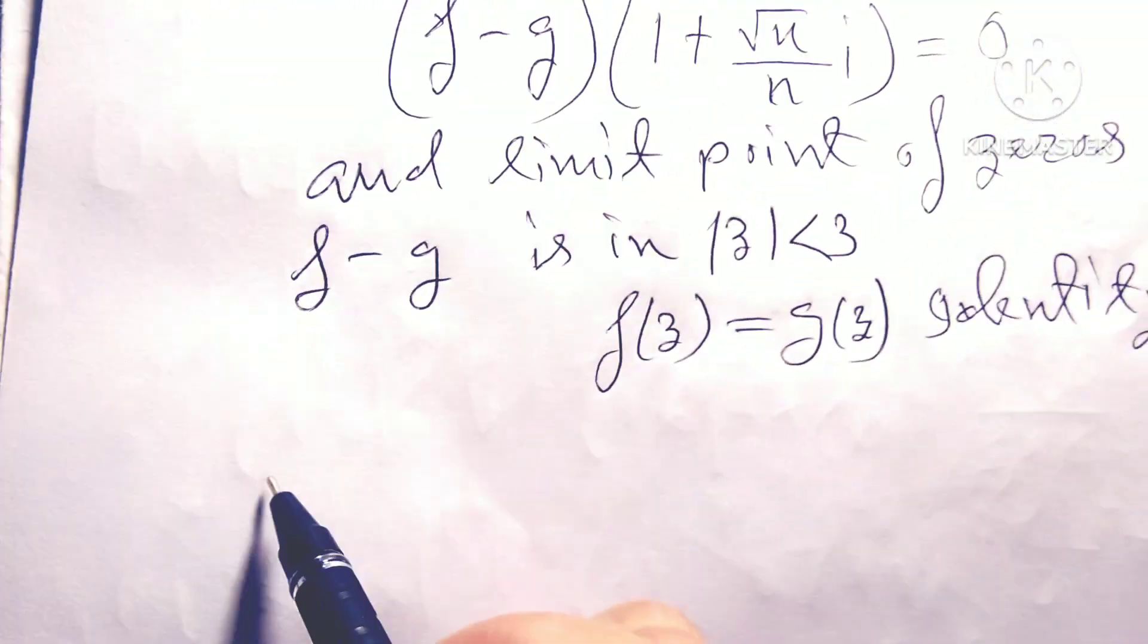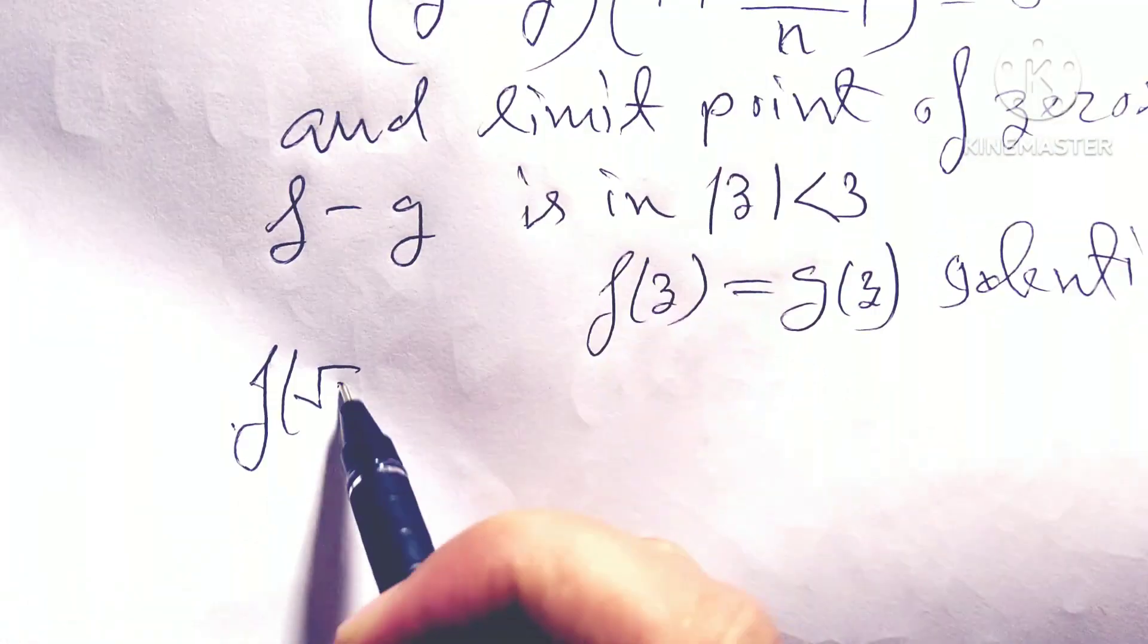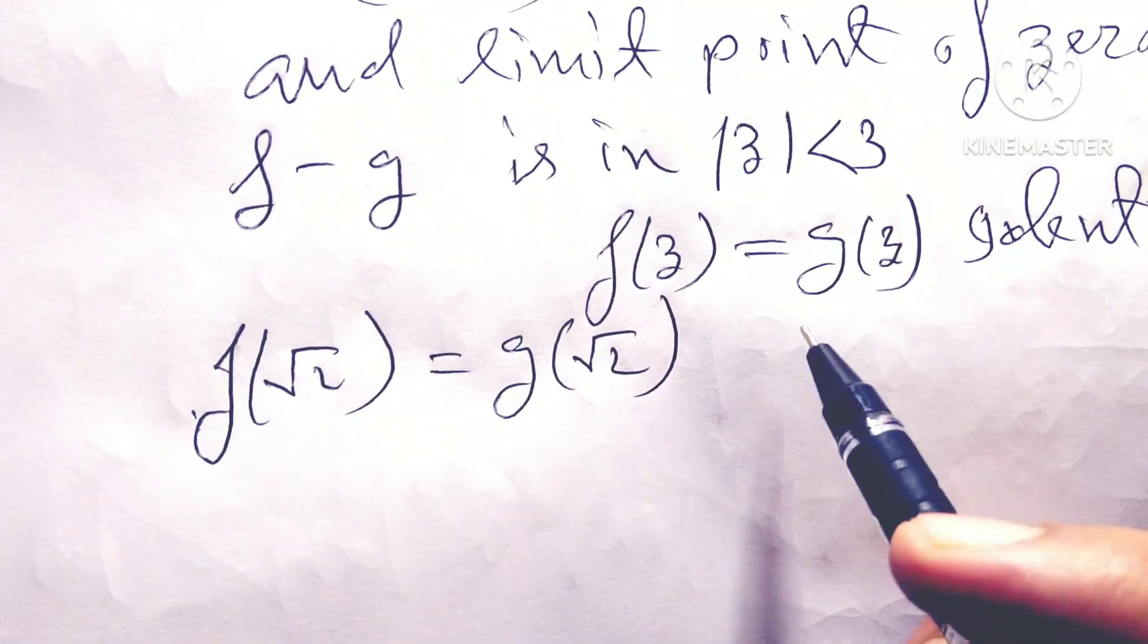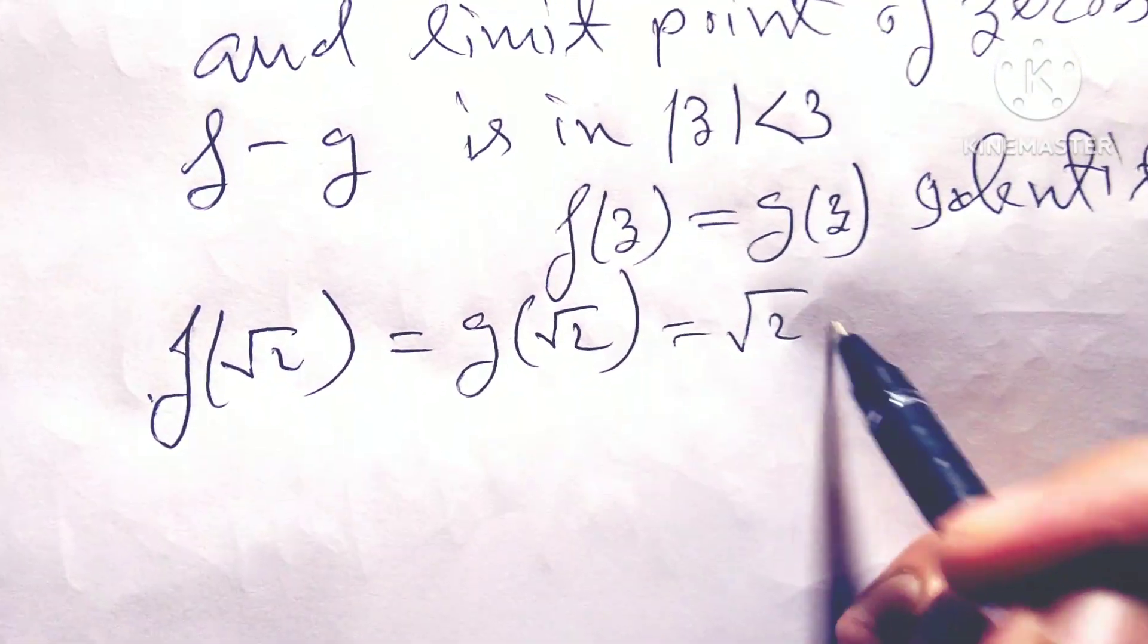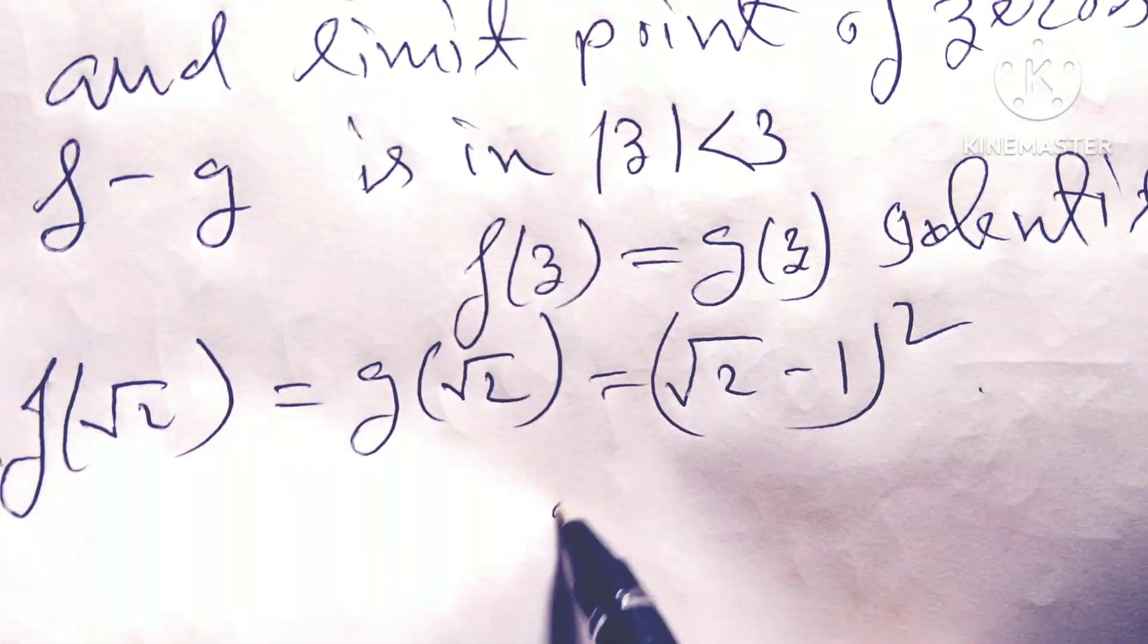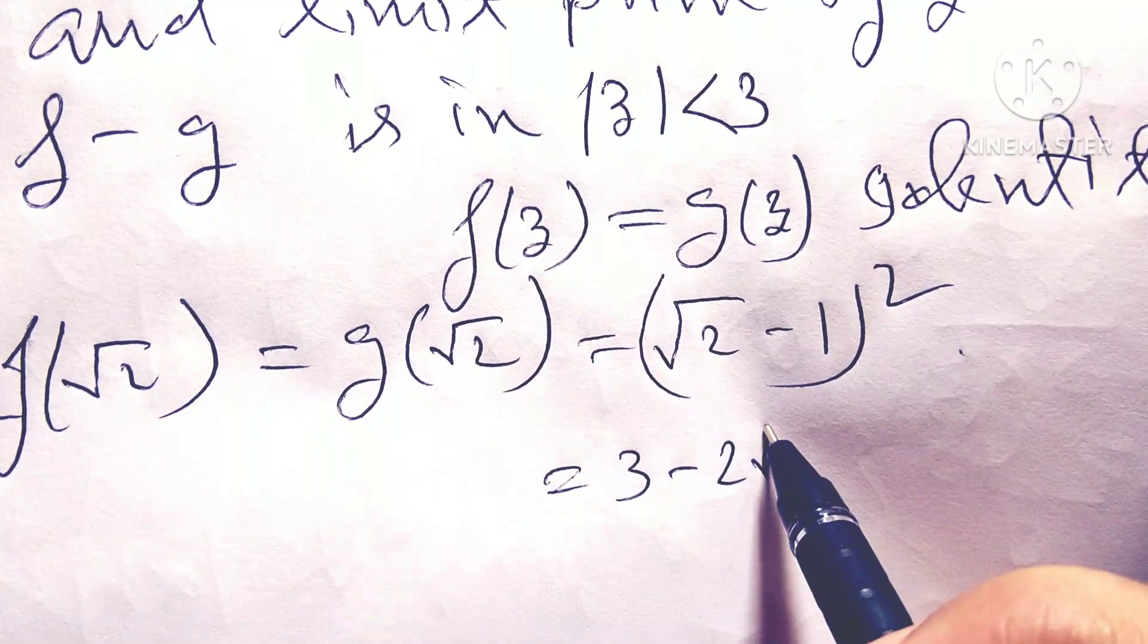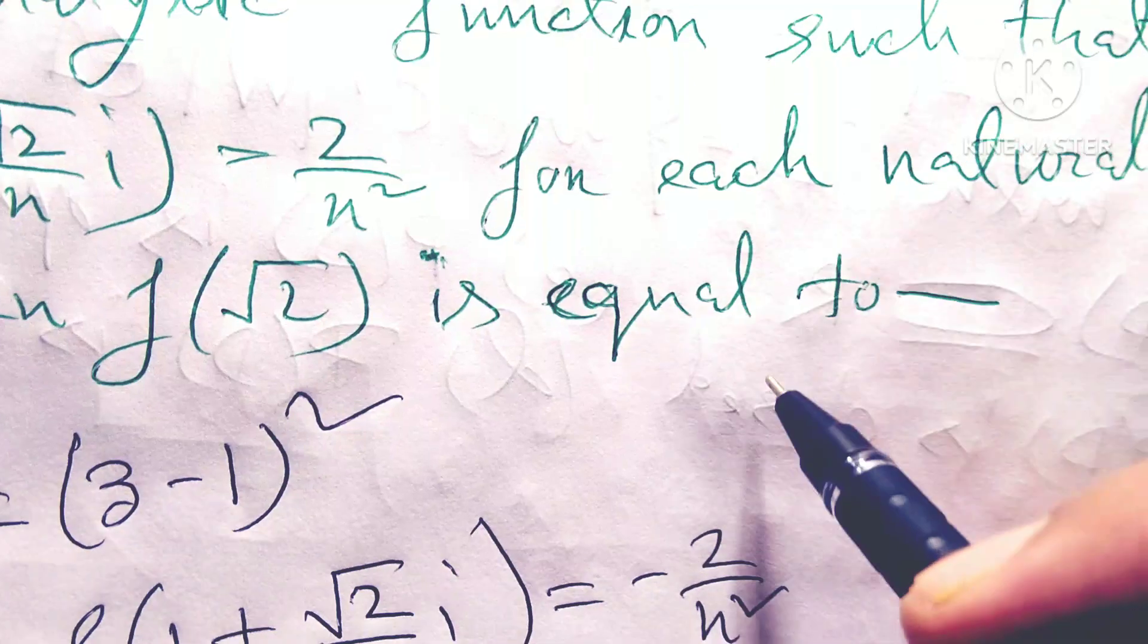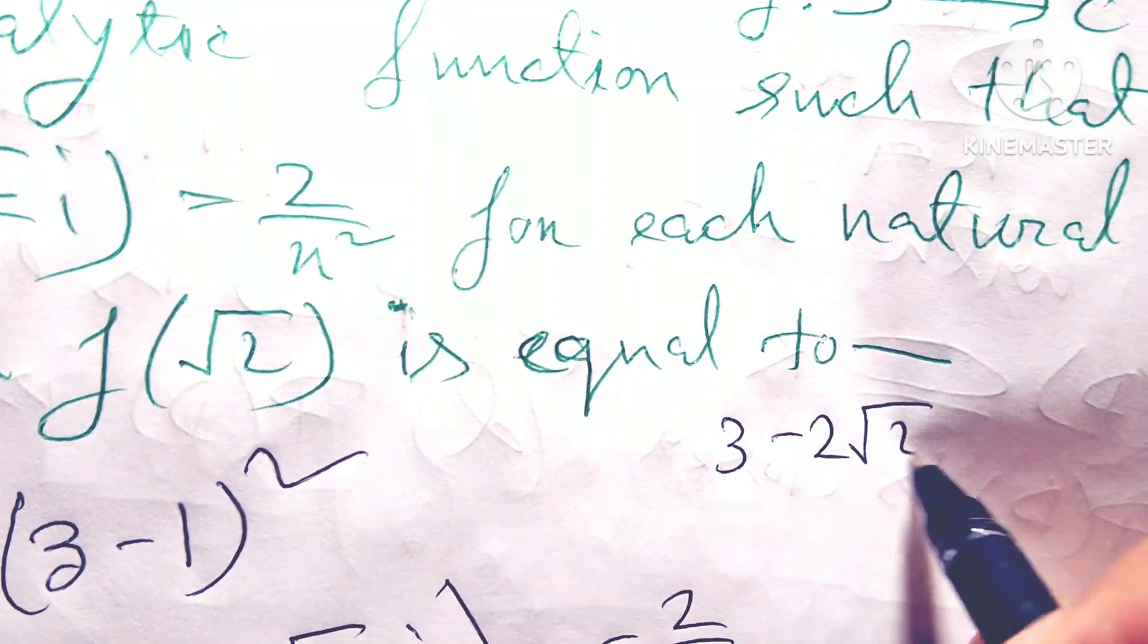So friends, f(√2) = g(√2) = (√2 - 1)². So I get the value equals to 3 - 2√2.